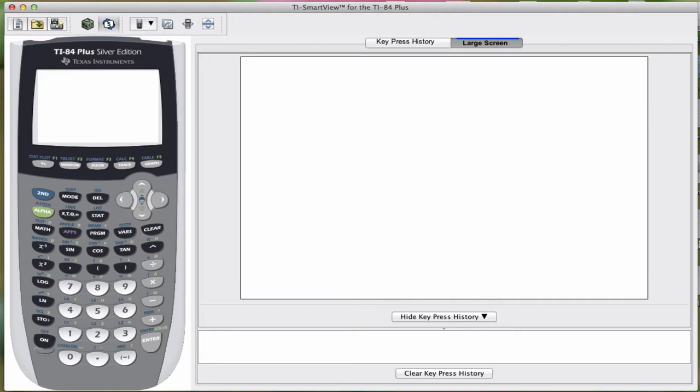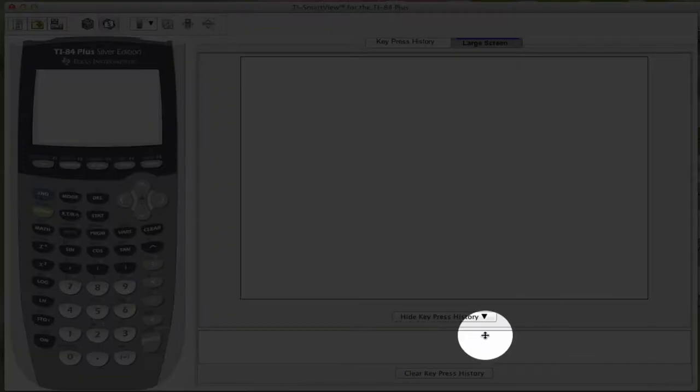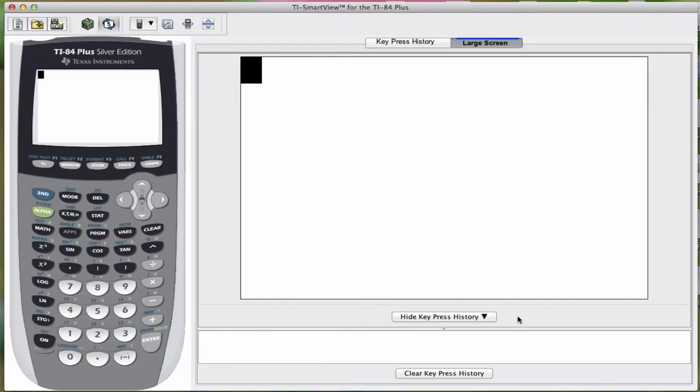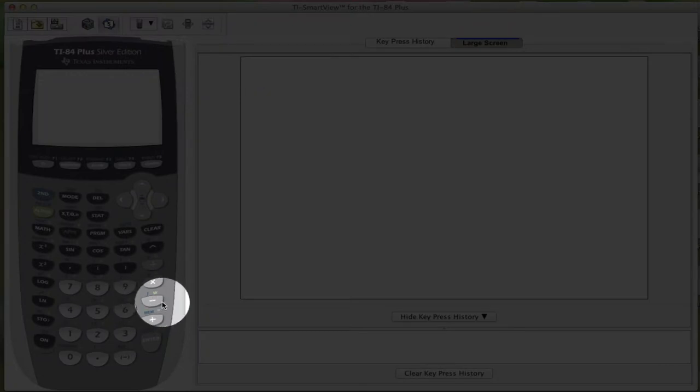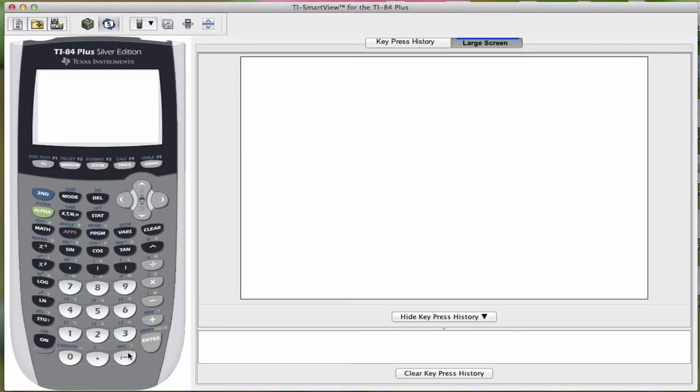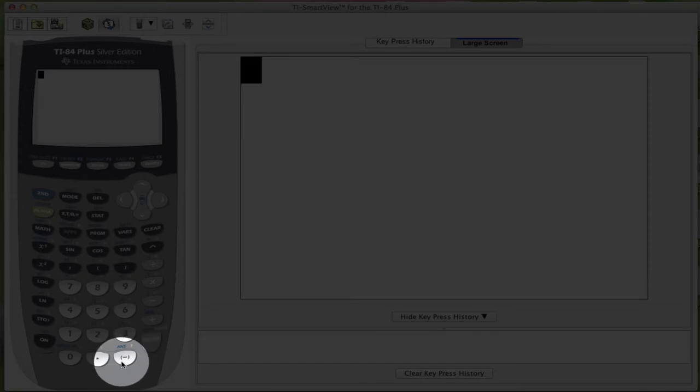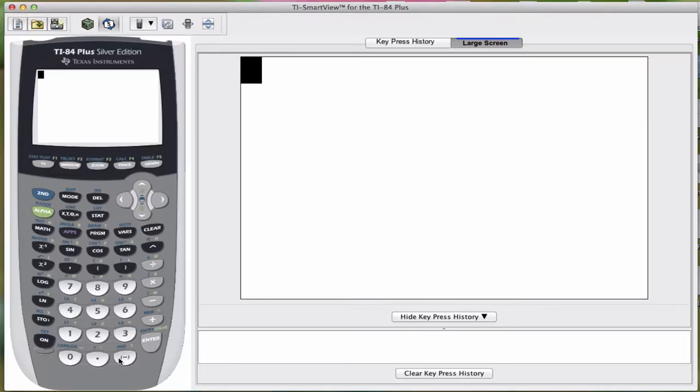One quick thing is that the key sequence is going to show up down here, so if you are unsure of what I pressed, you can look down there and I'll show you exactly what I pressed. So the first computation, it says the gray minus key located on the right-hand side of the calculator, which is right here, this is used for subtraction, and the white one, which is down below, near the bottom of the calculator, is used for negative numbers.